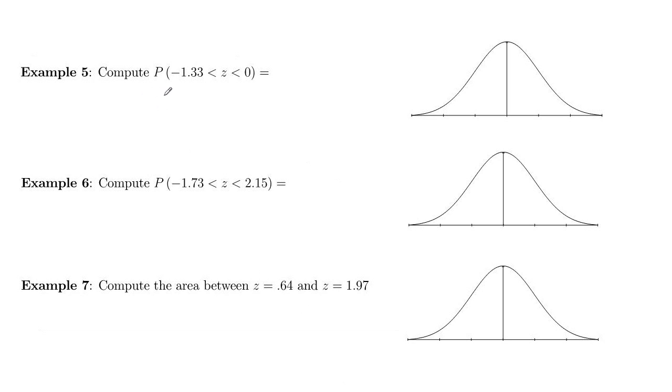In example 5, we want to find the probability that a random z value is between negative 1.33 and 0. So 0 is in the middle of the distribution, negative 1, negative 2, so negative 1.33 is about right here. We want this area right here, so let's go to the calculator.